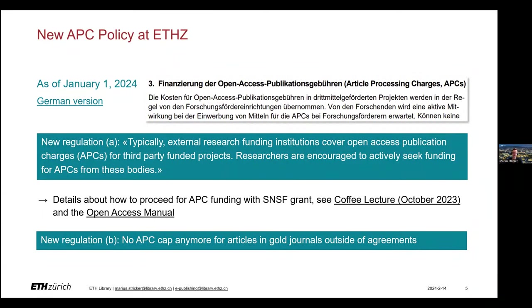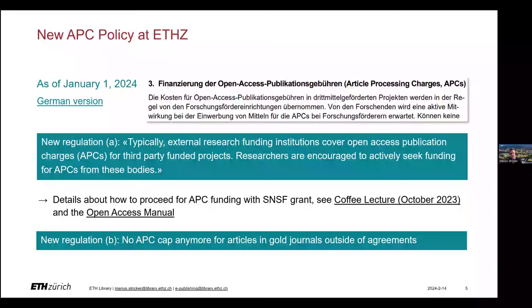Provision A refers primarily to third-party funding in general and is mainly due to budget restrictions at ETH. The more open access publications can be funded by external funding agencies, the more of the overall ETH Library budget is left for the rest. ETH has paid quite a lot of money in recent years for publications that could also have been financed by a third-party funder.